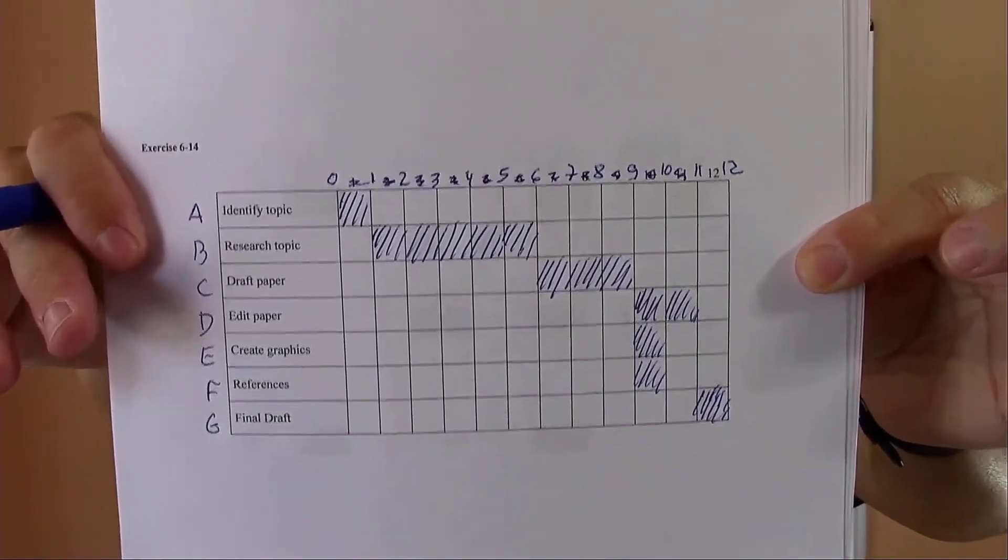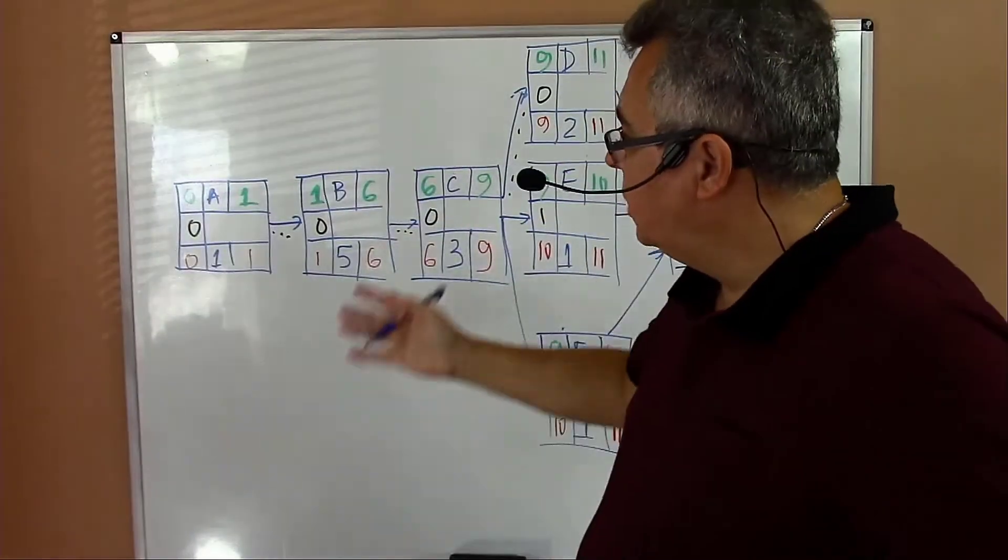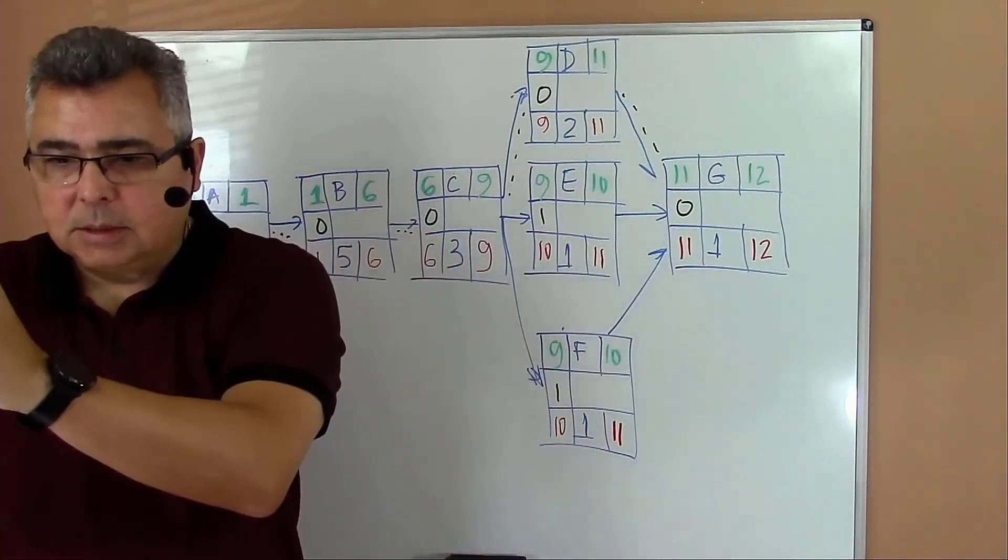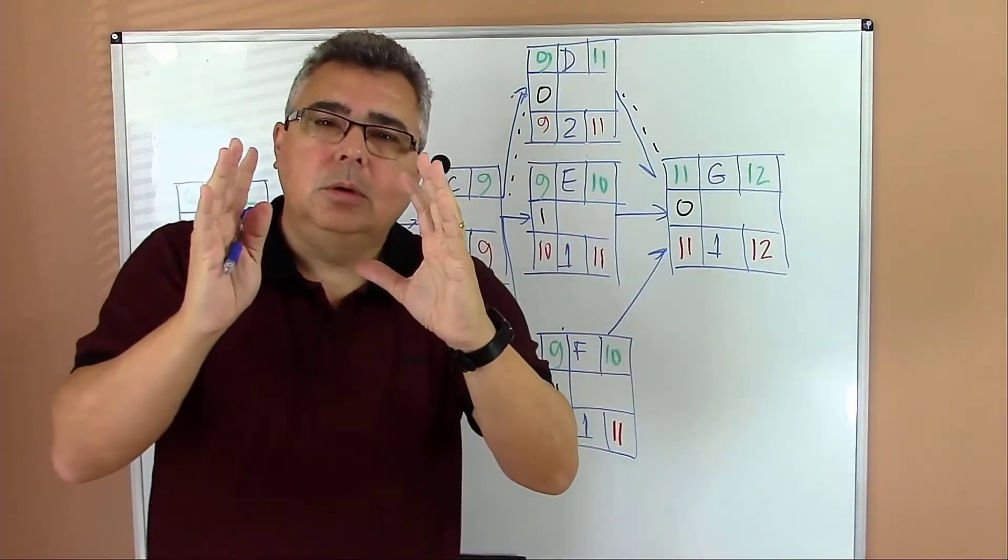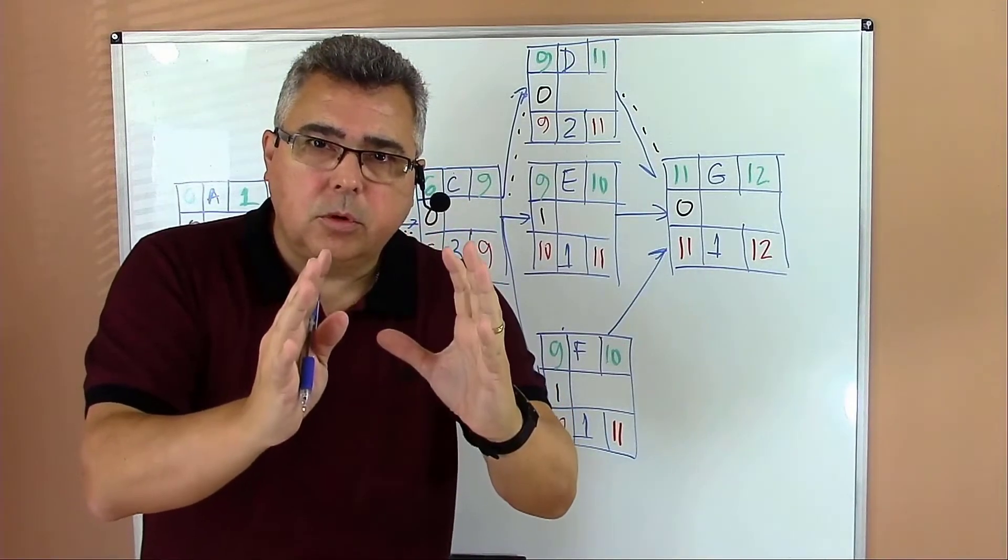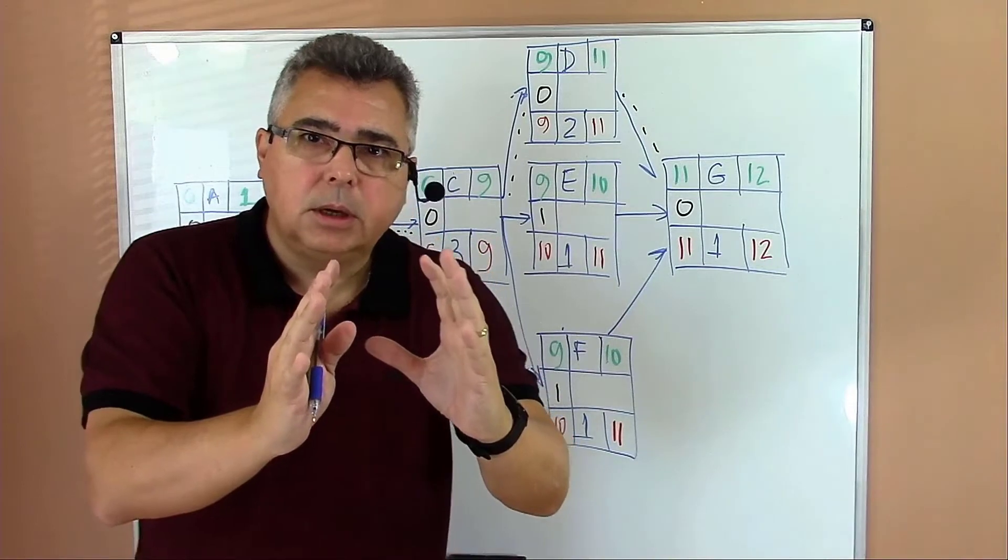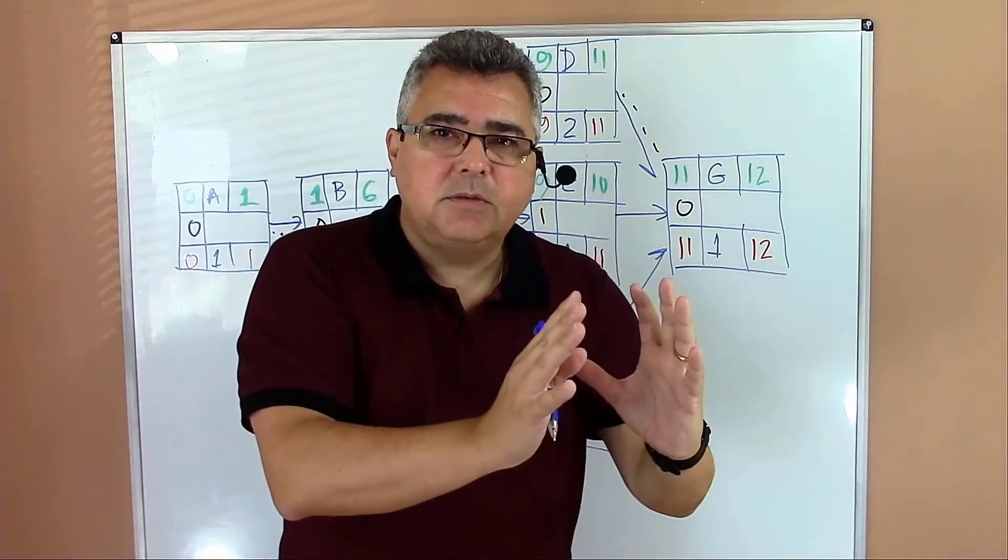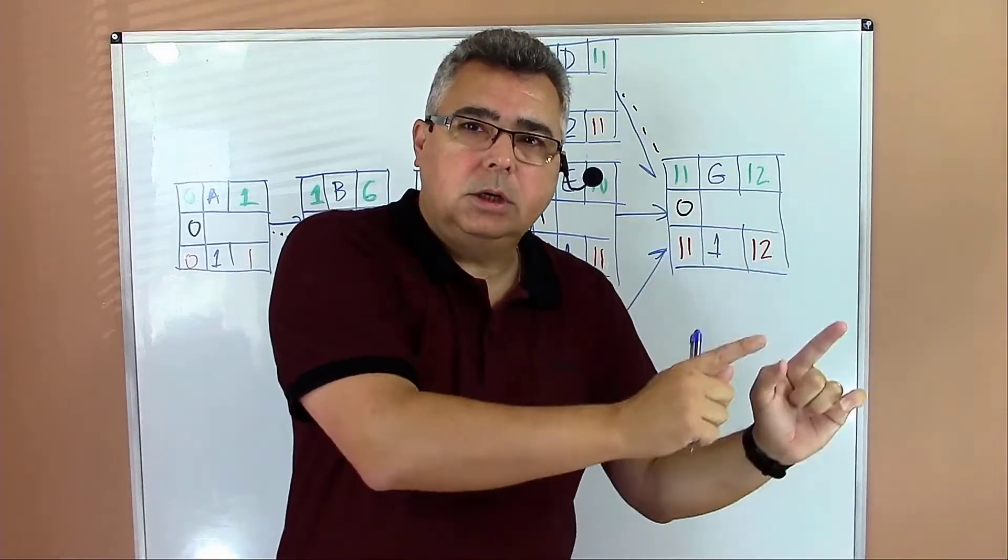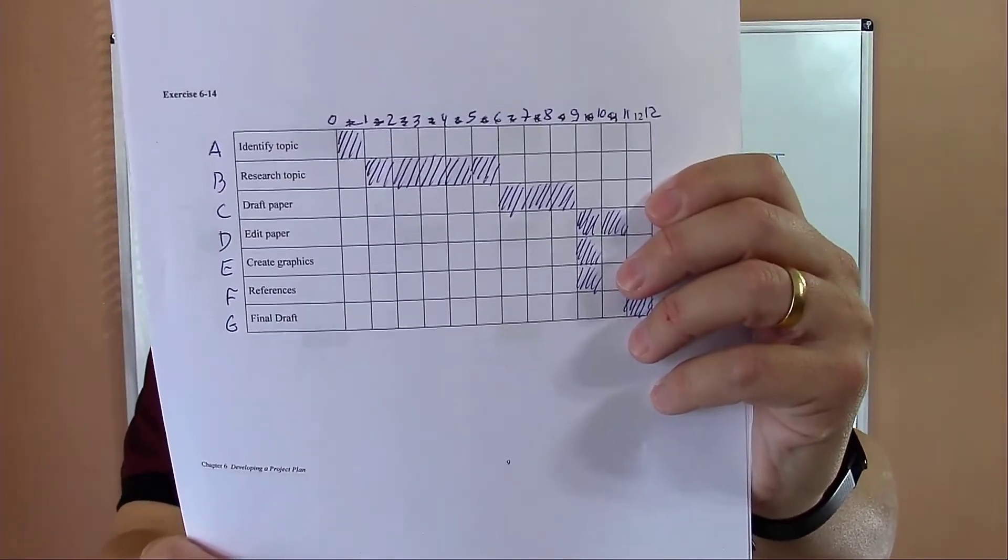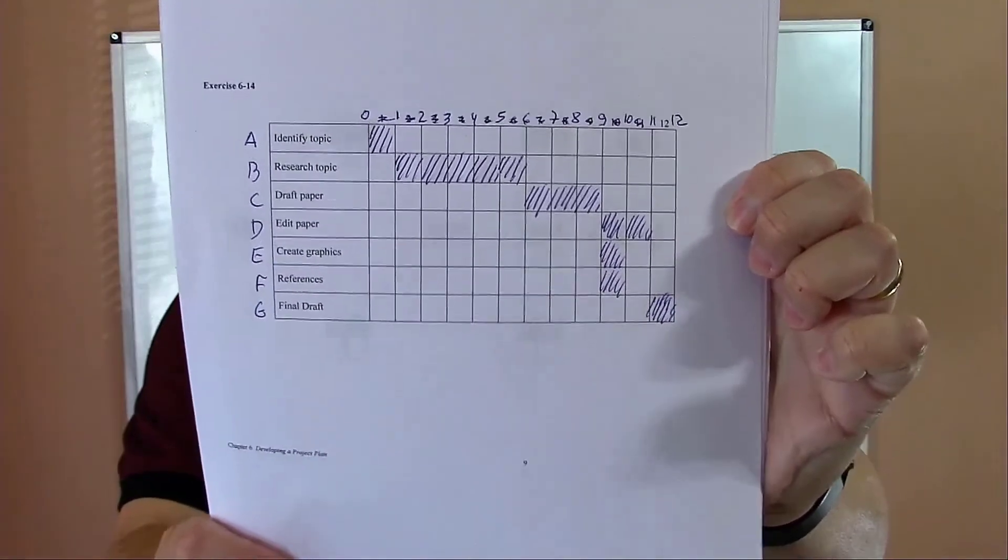What I did here is we went from the activity list, then we moved to compute the project network and find out the times for each activity. Then we moved to the Gantt chart, which is the project schedule.